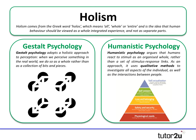An example you'll be more familiar with is humanistic psychology, which you study in your year-two approaches topic. Humanistic psychologists argue that humans react to stimuli as an organised whole and not as a set of stimulus-response links — so they are very much against the environmental reductionism point of view. As an approach, humanists take a qualitative approach to investigate the individual and really look at the interactions of people within society, taking a holistic point of view.